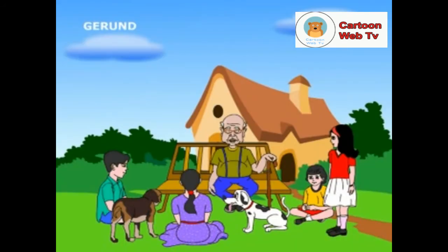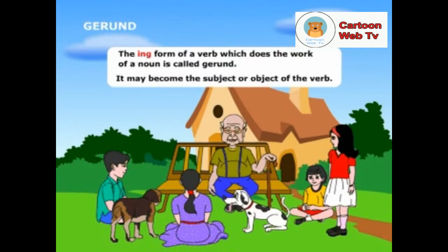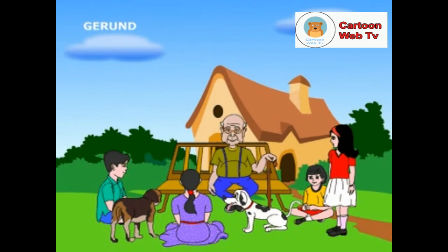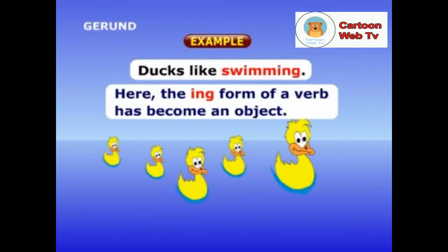Tell me, what is a gerund? Sorry, Grandpa, we have no idea. No problem, I will tell you. The ing form of a verb which does the work of a noun is called a gerund. It may become the subject or object of the verb. Example: Fishing is not allowed here. Here, the ing form of the verb is the subject. Ducks like swimming. Here, the ing form of a verb has become an object.